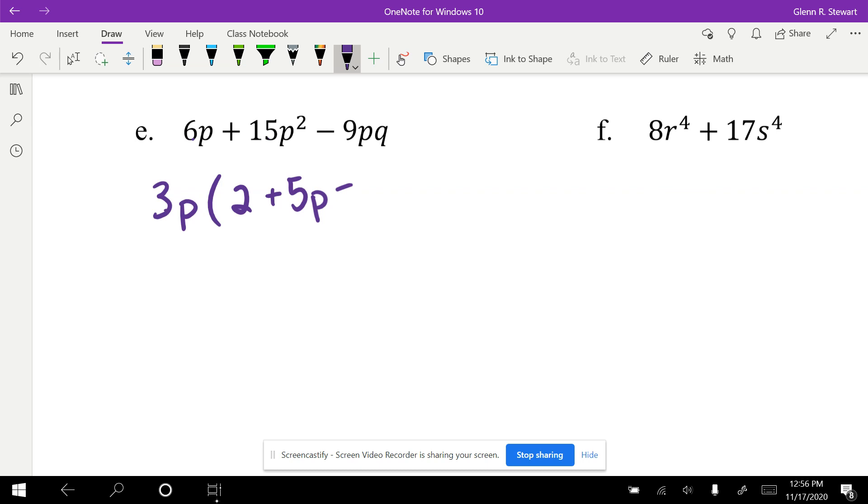9 divided by 3 is 3. I took out the p, I've got to leave the q. Done.